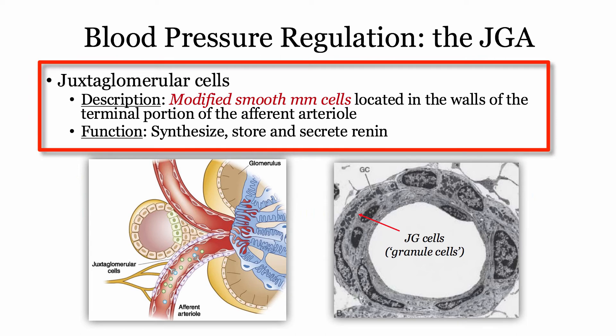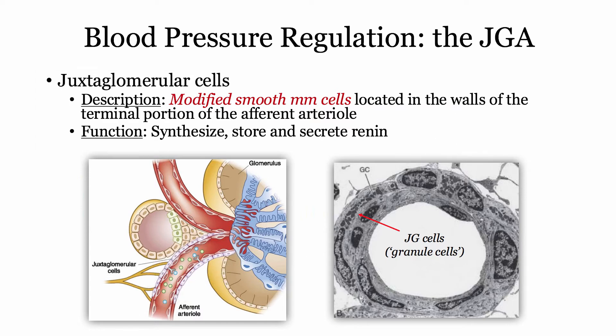Juxtaglomerular cells are described as modified smooth muscle cells located in the walls of the terminal portion of the afferent arteriole. They function to synthesize, store, and secrete renin. Whereas you won't be asked about the mechanism of renin release, you will need to be familiar with the triggers. It is easy to remember triggers if you know what they are doing.